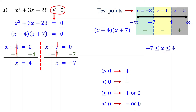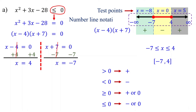To represent this solution on a number line, mark closed circles at negative 7 and 4. In number line notation, we use a closed circle to show that the endpoint of the inequality is included in the solution. Then, shade the line between these circles, indicating that any value of x within this range is a solution. In interval notation, the solution is represented as the interval negative 7 to 4, including both negative 7 and 4. Brackets indicate that the endpoint of the interval is included in the solution. We have represented the solution using number line notation, inequality notation, and interval notation.